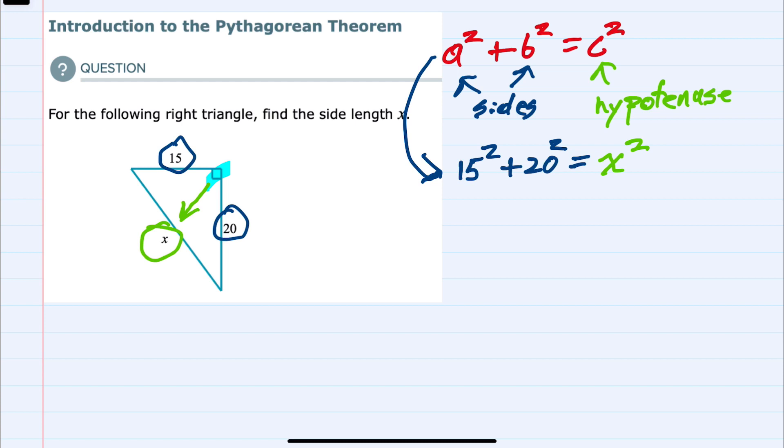15 squared is 225, plus 20 squared, which is 400, and that will equal x squared.